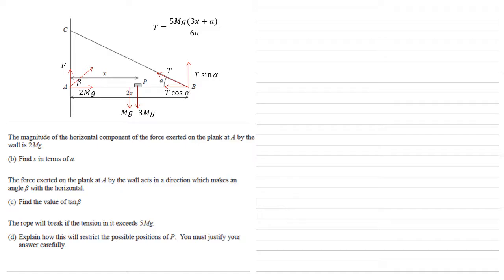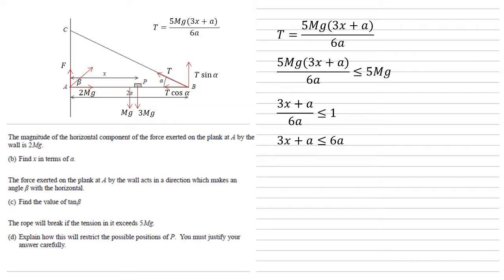Now the rope will break if the tension in it exceeds 5Mg, we need to explain how this will restrict the possible positions of P. So we know that tension equals 5Mg brackets 3X plus A over 6A. As the rope will break if the tension exceeds 5Mg, this whole fraction must be less than or equal to 5Mg. There's 5Mg on both sides, so if we divide both sides by that, we get 3X plus A all over 6A is less than or equal to 1. Multiplying by 6A, we get 3X plus A smaller than or equal to 6A. Take away the A and divide by 3, we get that X must be smaller than or equal to 5A over 3. Now looking at this physically, X is a distance of P from A. So that tells us that P can't be further than 5A over 3 from the point A.